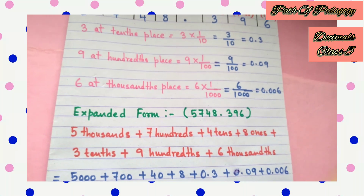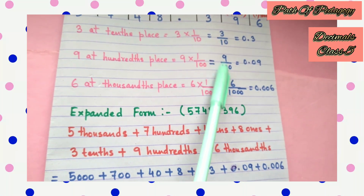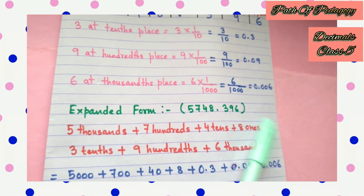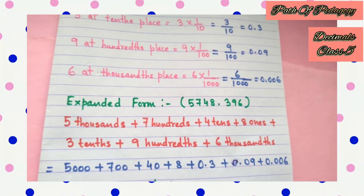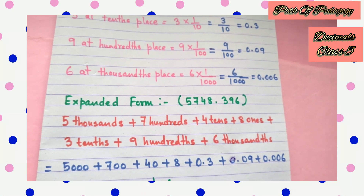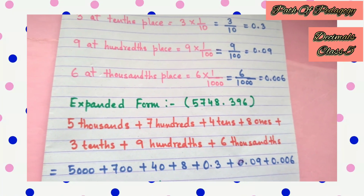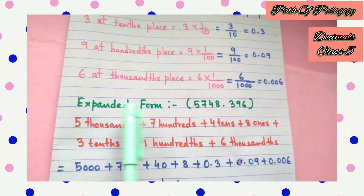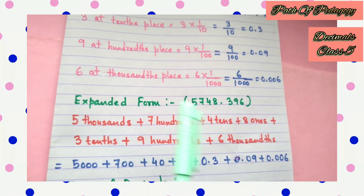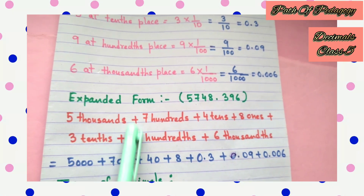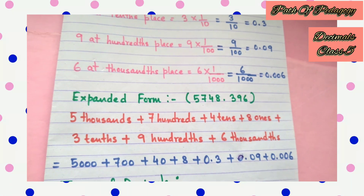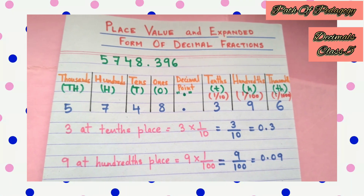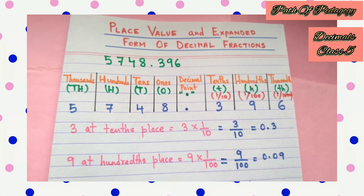So you have already learnt how to convert a decimal fraction into a decimal number, and we have learnt how to write any decimal number in expanded form — just break down each place value and give a plus sign after each one. That is it for today. In the next video we will cover some other concepts of the chapter Decimals. See you in the next video. Till then, take care. Bye bye and thank you for watching.